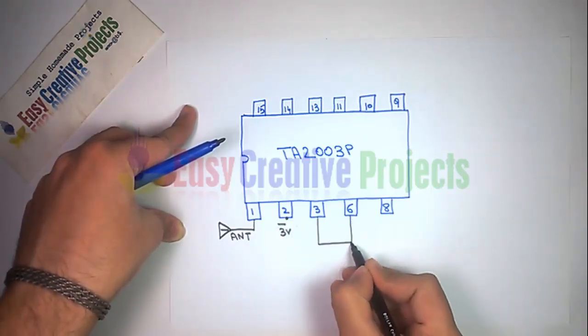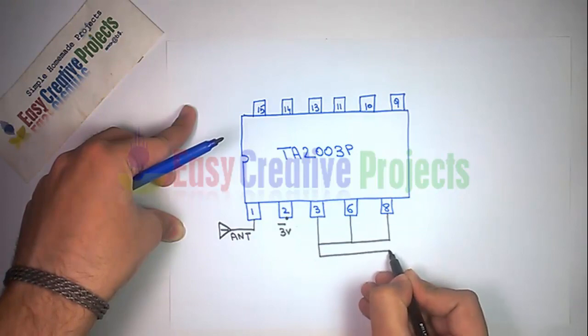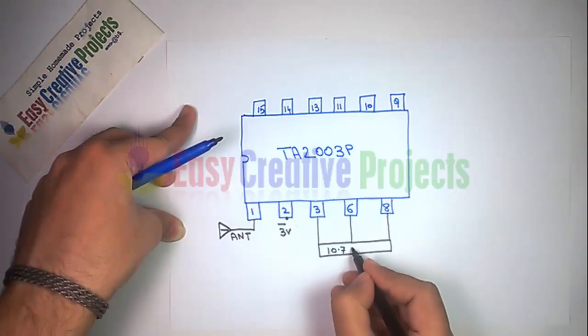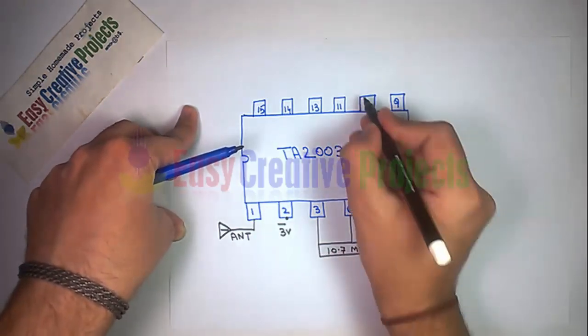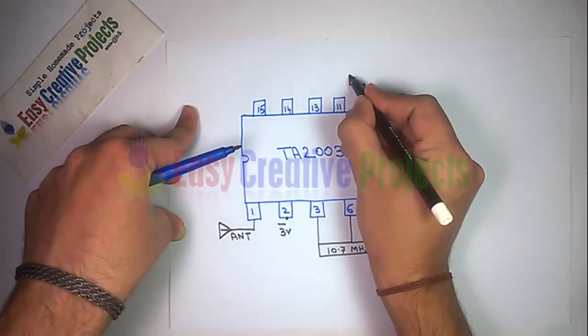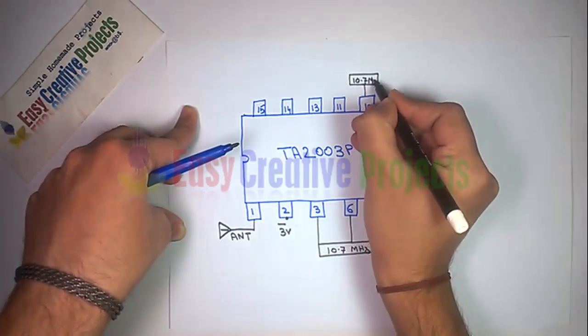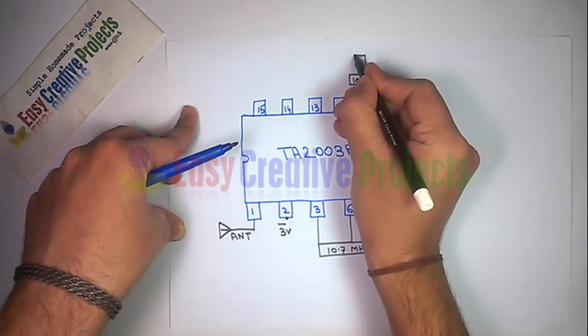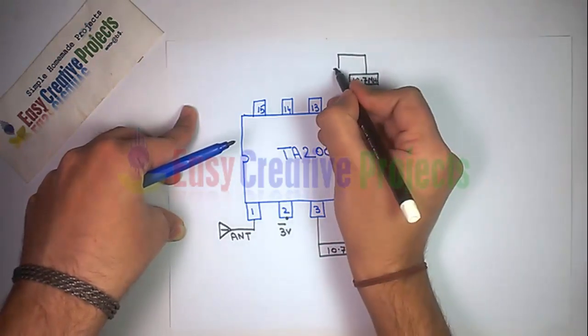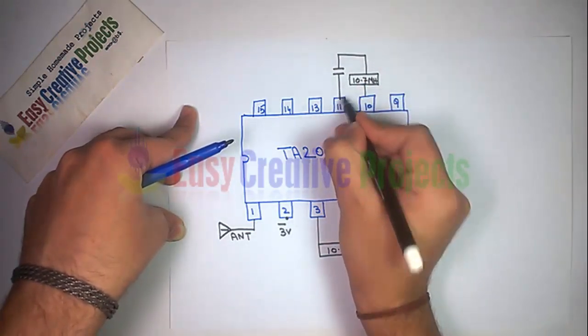Connect 3-pin ceramic filters with pin 3, pin 6, and pin 8. Now connect 2-pin ceramic filter with pin 10 and positive power. Now connect 471pF capacitor with pin 11 and positive power.